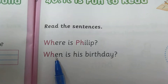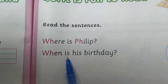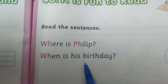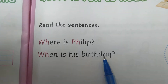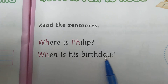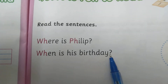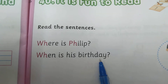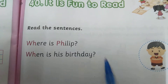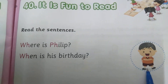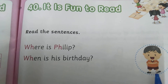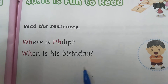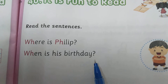W-H-E-N, when? I-S, is. H-I-S, his. B-I-R-T-H-D-A-Y, birthday. Question mark. When is his birthday? Look in the picture here. It is asking: where is Philip? When is his birthday?